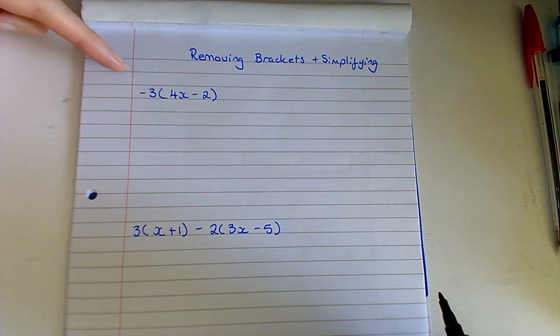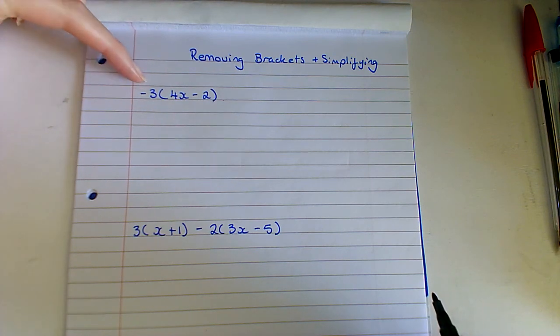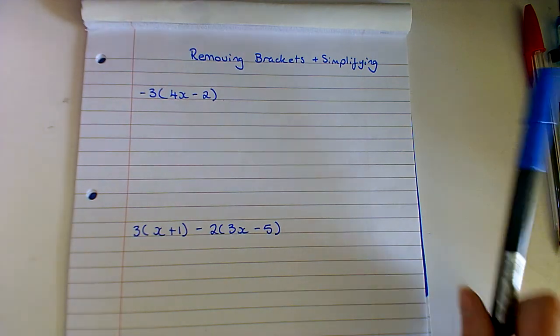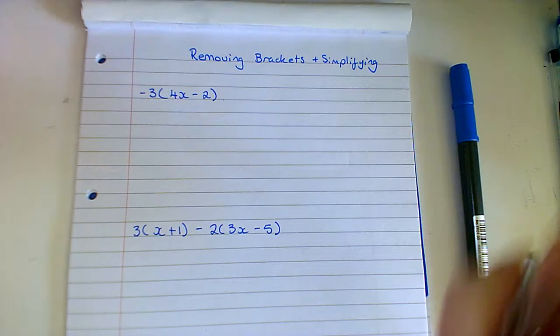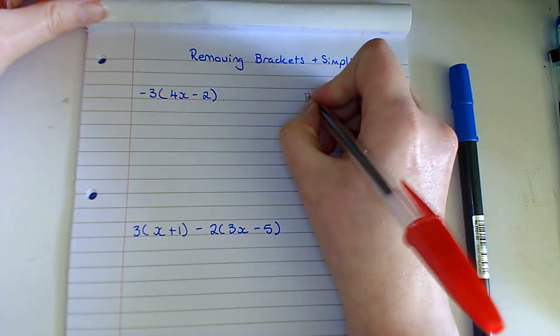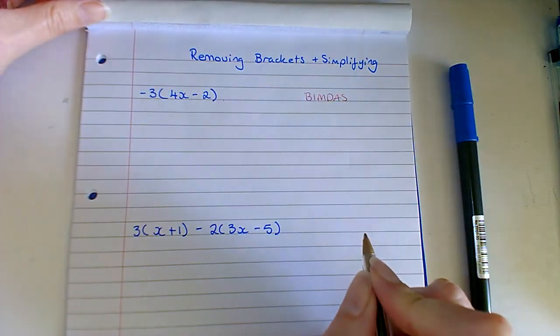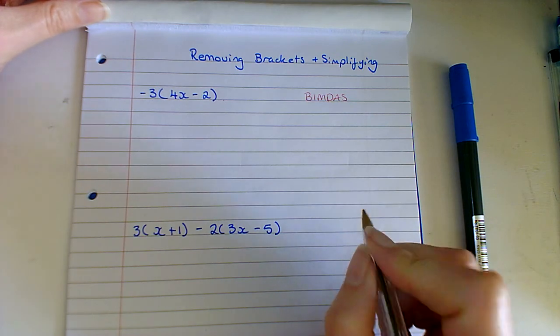So in this first example here you have a number outside your bracket and then you have two terms inside your bracket. And the main things that we're going to have to remember here are BIMDAS. So that is remembering the order of operations and how we multiply.